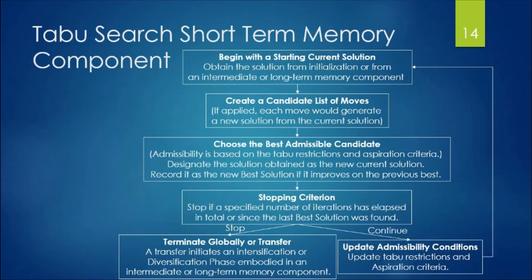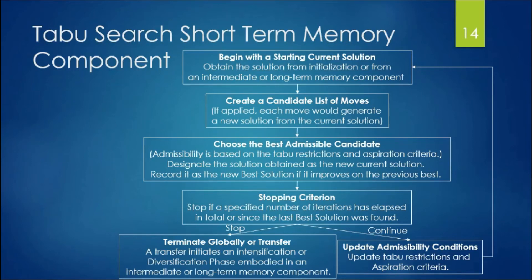The short-term memory component of Tabu Search: begin with a starting solution, create a candidate list of moves, choose the best admissible candidate, check the stopping criterion — if reached, terminate; otherwise continue, updating the admissibility conditions, that is the Tabu restrictions and aspiration criteria. This flowchart explains how the short-term memory component inside Tabu Search works.